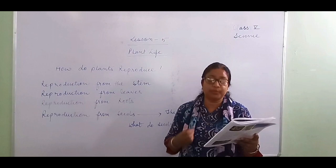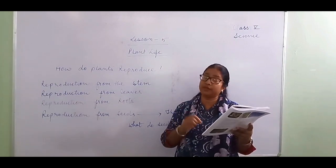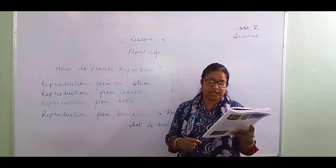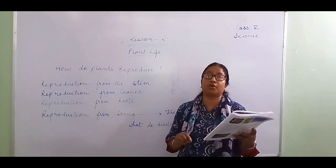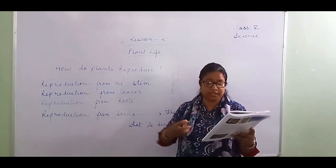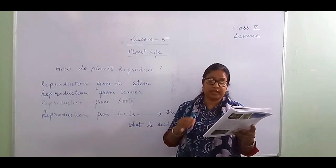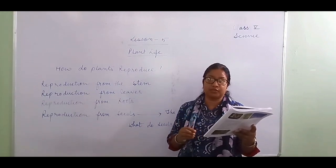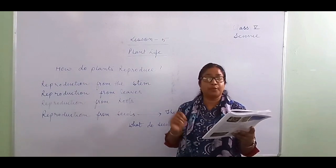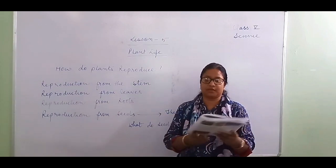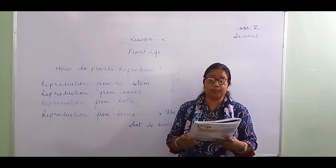Take a potato and observe it carefully. You will find that it has several small buds on it — we call these the eyes. New plants grow from these buds, or eyes. Ginger plants also grow from buds.